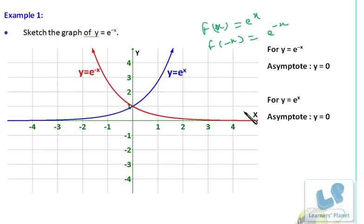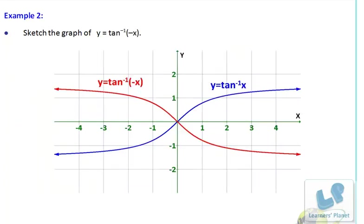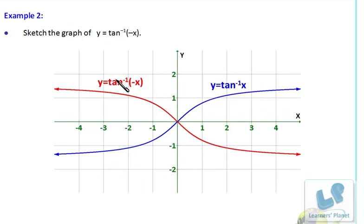Suppose you have the graph of tan⁻¹(x) — this graph. Now if x is converted to -x, you just turn it around, rotate it along the y-axis, and you will be getting the graph of tan⁻¹(-x). It doesn't matter whether it is tan⁻¹(x) or any other function — consider this as f(x), and if you turn it around you will be getting the graph of f(-x).